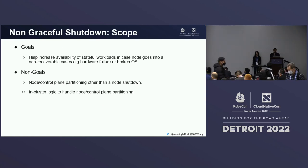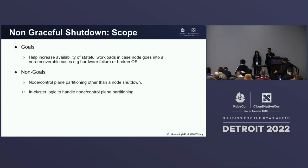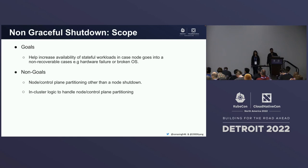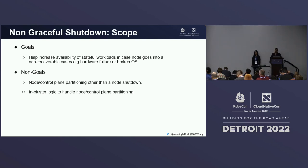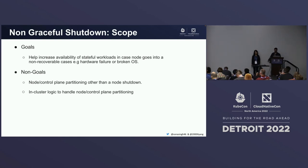The goal of this feature is to help increase availability for stateful workloads, because as you saw, it can take approximately 11 minutes for a pod's container to come back online. We want to handle non-recoverable cases when hardware goes down or the OS is broken. Node and control plane partitioning is not in scope because when a node is not ready, it could be due to a network split, and we can't know if it's a non-graceful shutdown or simply network unreachability.